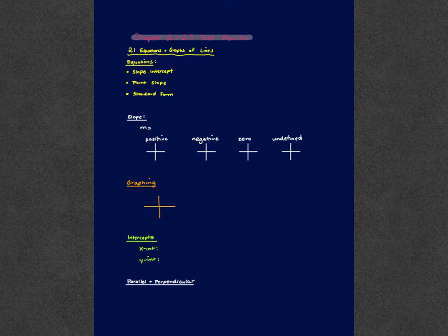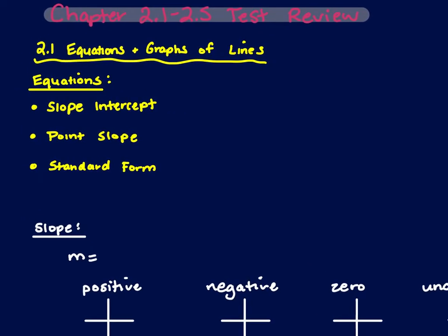We start with 2.1, which is the equations and graphs of lines. So the review of y equals mx plus b, which is our slope-intercept form, where m is the slope and b is our y-intercept.